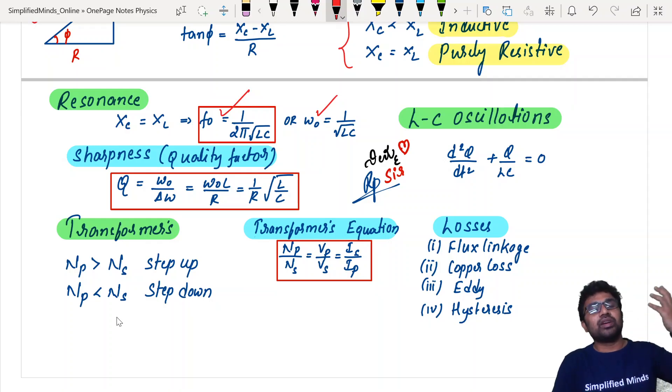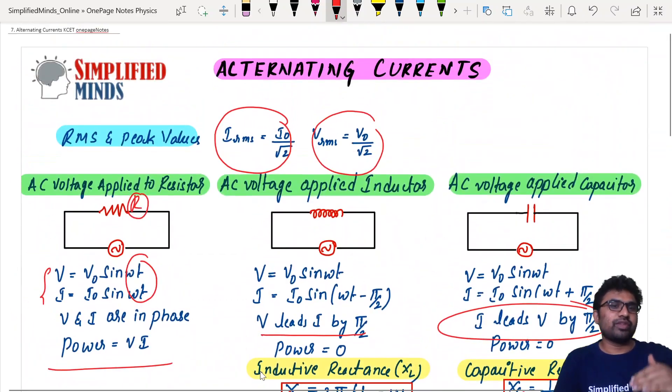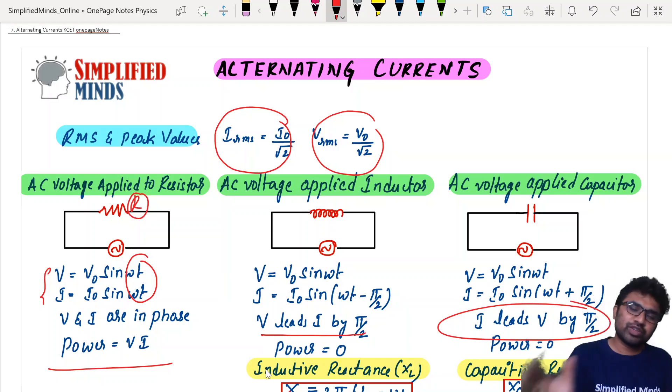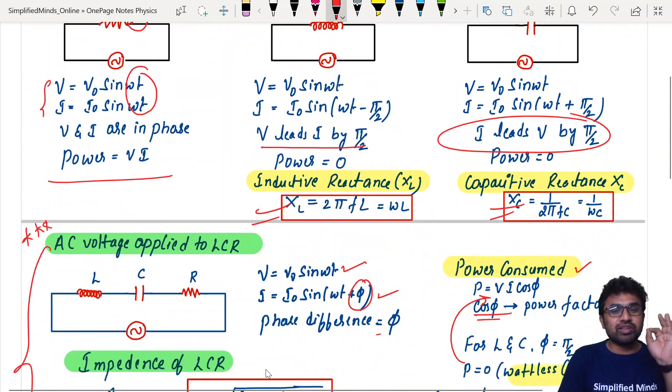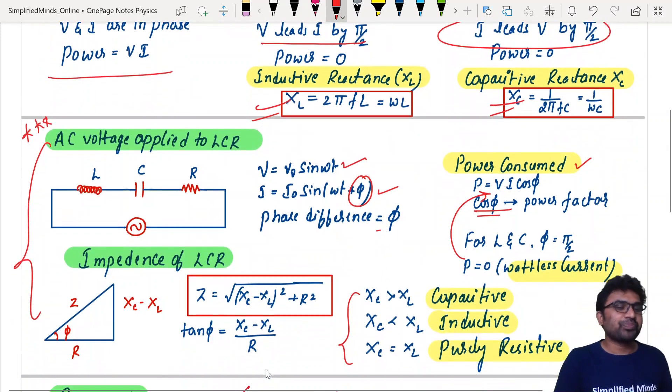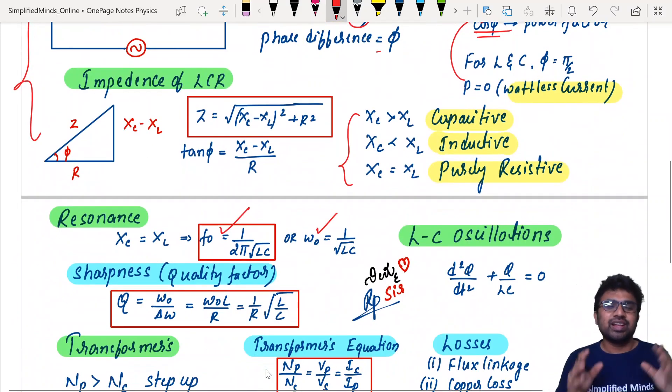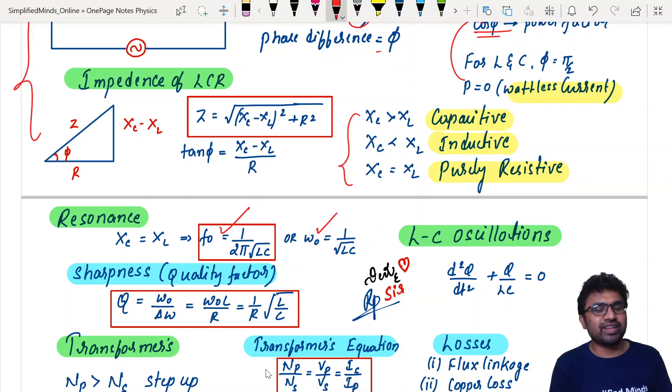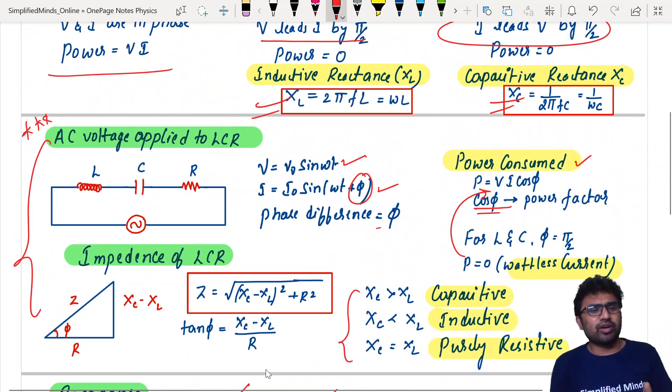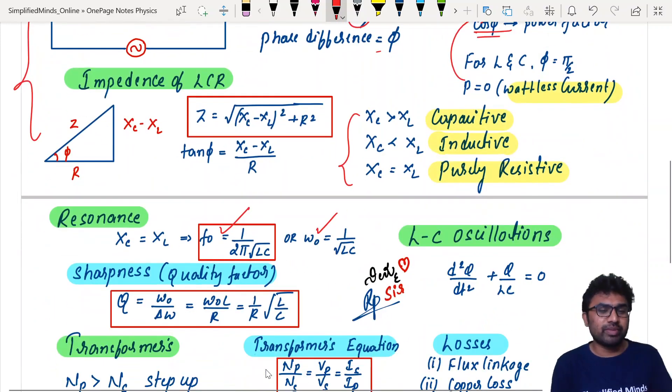If you think about alternating current, these are the formulas you should know for CUET. It is a minimum of formulas. You know all these formulas here, but you must be able to apply them. So that's all about this.